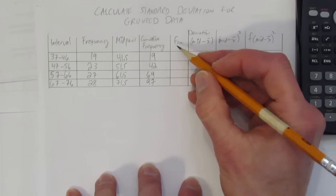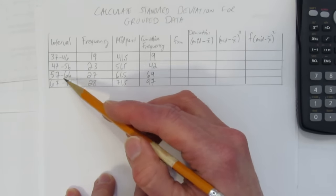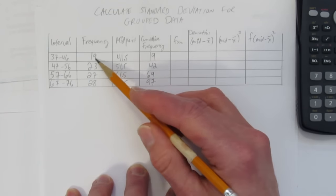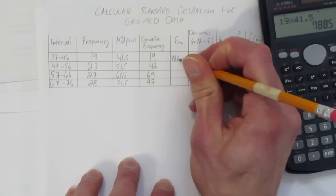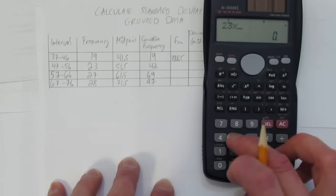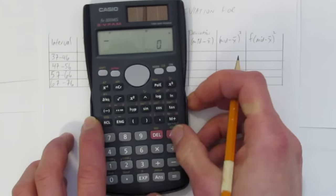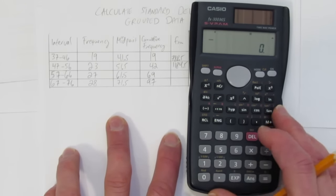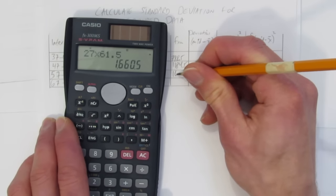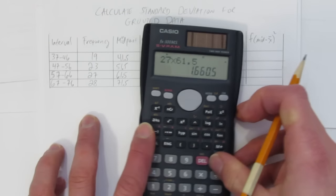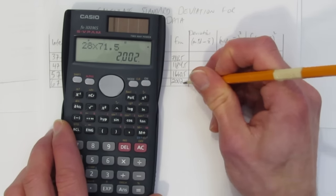Once we've got that column done, we want to calculate the frequency times the midpoint. That'll give us this f times m. It's sort of like there are 19 in this category, this interval. We're going to count each of those 19 as 41.5. So we have 19 times 41.5. That's 788.5. Next, we've got 23, we'll count them all as 51.5s. That's 1184.5. Next, we've got 27 times 61.5. And that gives us 1660.5 total for that one. And then we have 28 times 71.5. That gives us exactly 2002.